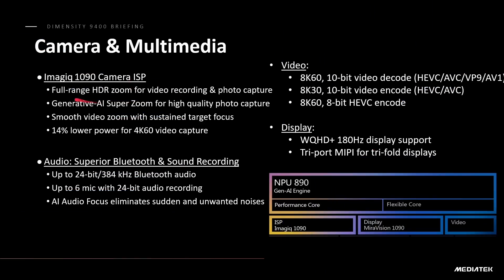A quick look at other features: the camera supports full-range HDR, zoom for video recording, and video capture. Key takeaways are 8K60 decode including AV1, 8K30 10-bit encode in H.265 and H.264, and 8K60 8-bit H.265 encoding. It also supports triple-fold displays, so maybe that's coming in the future — we've seen at least one of those already.